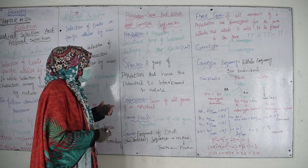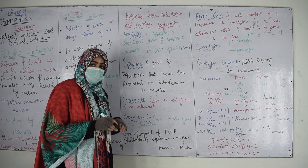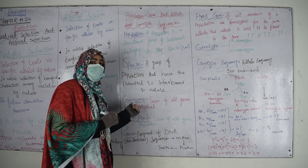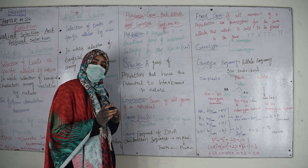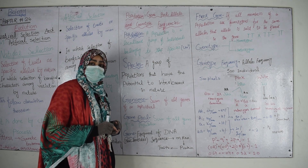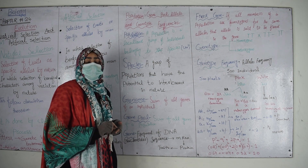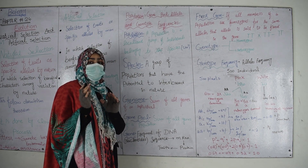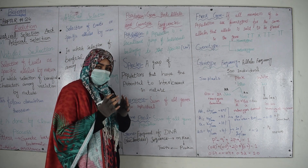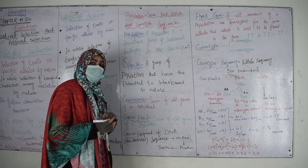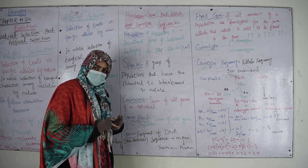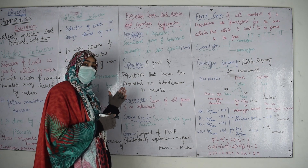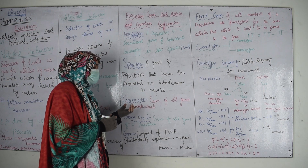Genome is the sum of all genes of an individual. For example, if we talk about humans, what is the human genome? In our body, there are genes present in the nucleus and also in the mitochondria. We call all of these collectively the genome. In plants, the genes are present in the nucleus, mitochondria, and chloroplasts — all together form the genome. So the sum of all genes of an individual is known as genome.